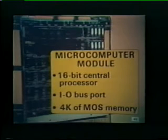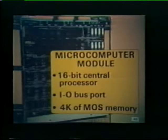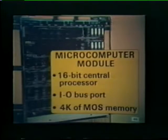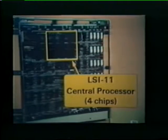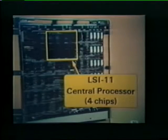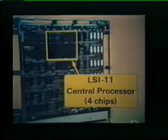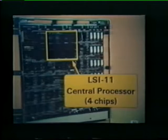One of these circuit boards is called the microcomputer module. This module contains three major system components: the 16-bit central processor, an I/O bus port, and up to 4K words of solid-state MOS memory. Notice that the entire central processor is implemented on just four semiconductor chips. These four chips perform all of the instruction decoding, bus control, and arithmetic logic functions required by the LSI-11 system.